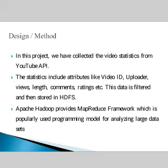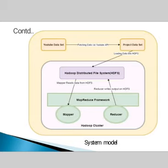This data is filtered and then stored in HDFS. Apache Hadoop provides the MapReduce framework, a popularly used programming model for analyzing large datasets. This is the system model, showing the components: YouTube API, Hadoop cluster in AWS, HDFS, and the MapReduce framework. The system fetches YouTube data — video ID, uploader, age, category, length, views, ratings, comments — stores it in HDFS via YouTube API, processes it through the Mapper class, stores intermediate output in a local file system, and the Reducer class applies business logic to produce the final output stored back in HDFS.